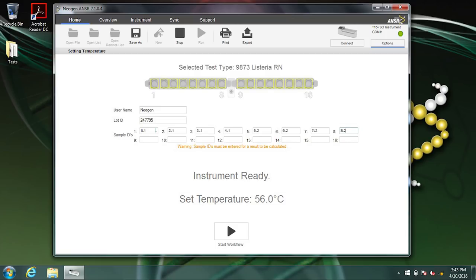Fill in the username and lot ID from the kit and corresponding labels from your samples in the sample IDs. These should match the cluster tubes as well. If you do not put in a sample ID next to the well number, the reader won't read it even if it has a sample. Be sure to provide an ID for every well you're running.